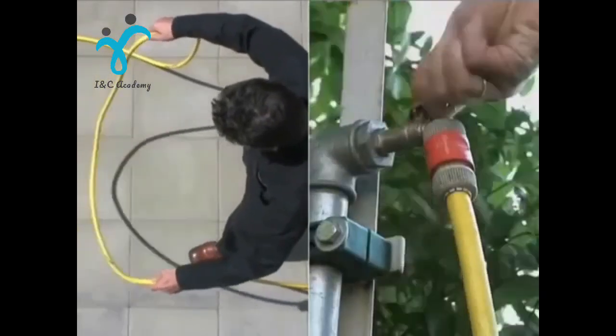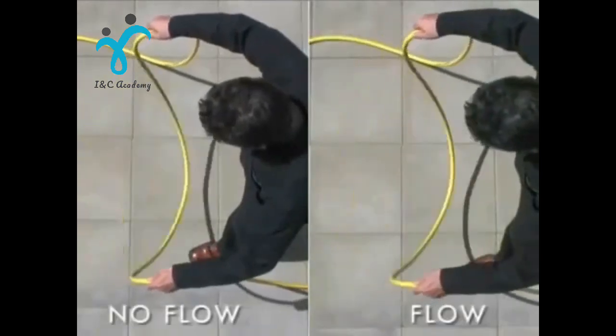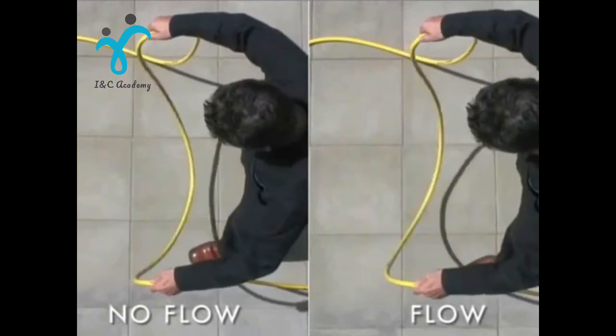But when a water flow is turned on, the water is forced through the swinging hose. The hose twists as a result of the changing angular velocity in the curved hose.